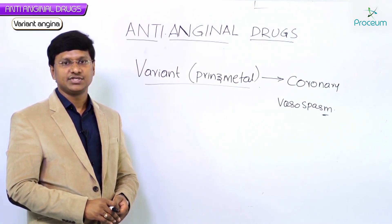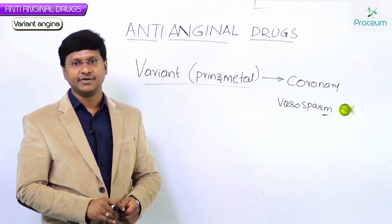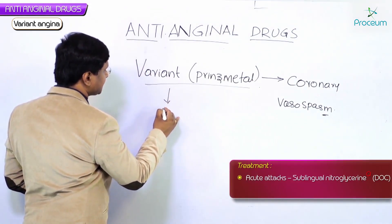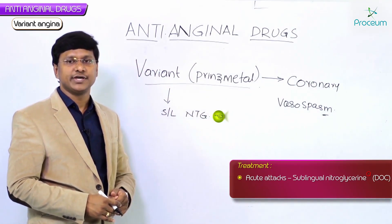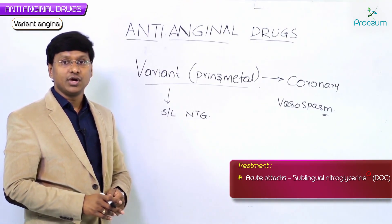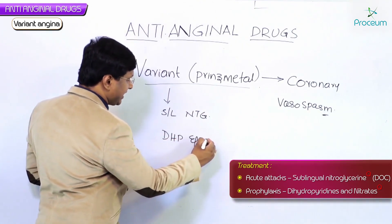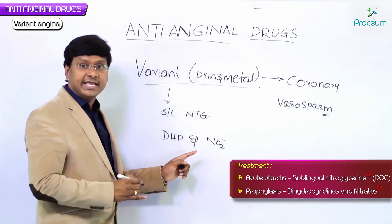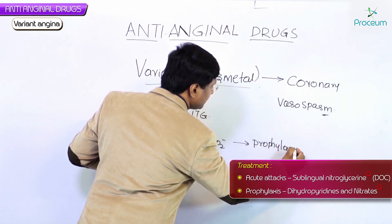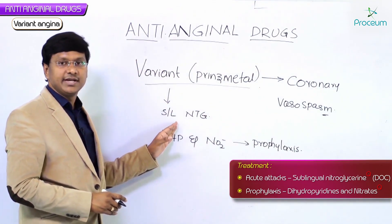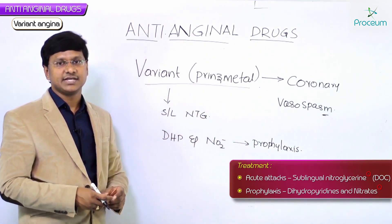So what is the treatment in these individuals? You have to relieve the coronary vasospasm. Sublingual nitrate is the drug of choice for acute attack, whereas both dihydropyridines and nitrates can be given for prophylaxis.